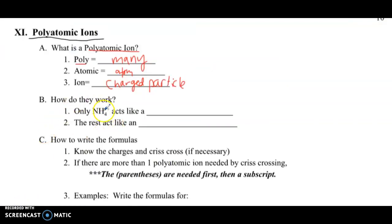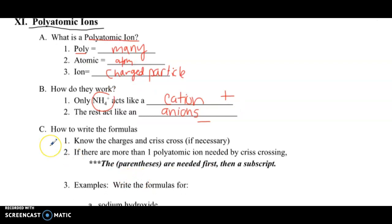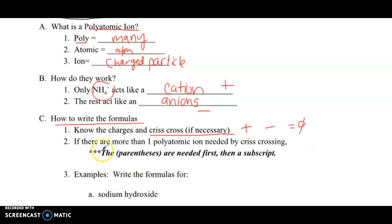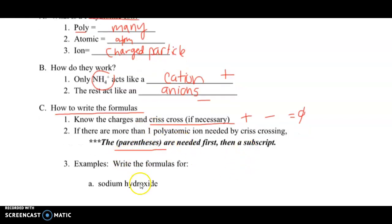How do they work? Only NH4 acts like a cation—it has a positive charge. All of the rest act like anions with a negative charge. We're just going to use the same rules, but now we're using polyatomics. Know the charges and crisscross if necessary. If there's more than one polyatomic ion needed by crisscrossing, you have to put parentheses before and then a subscript after it.